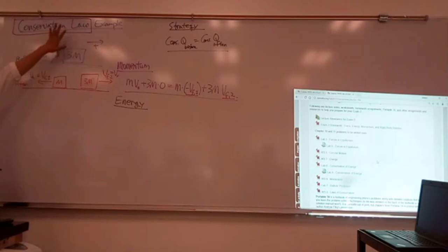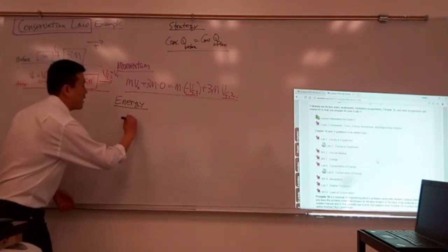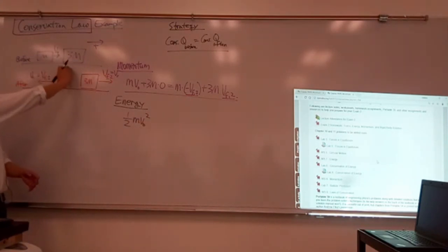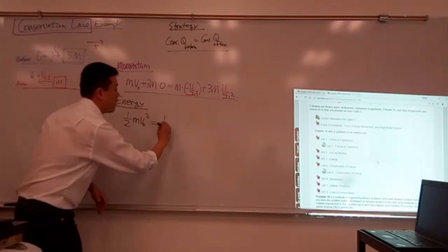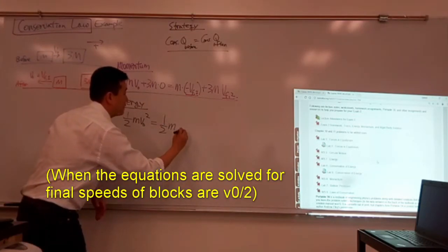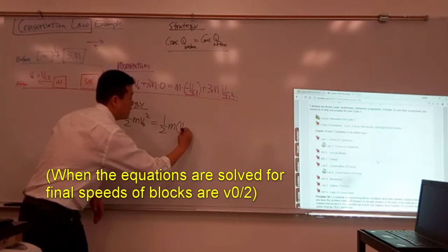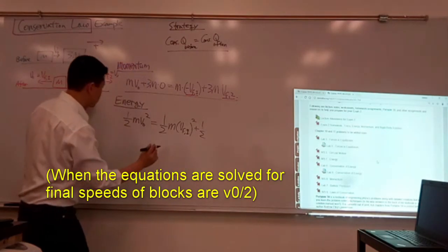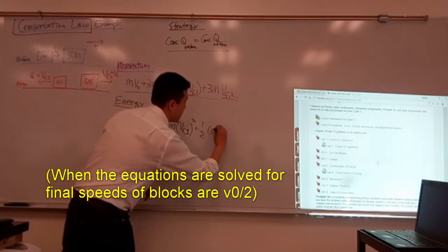So here, all the energies you have are kinetic energy, no potential energy here. So you can say 1 half M V naught squared, initial kinetic energy, is equal to the final kinetic energy here, 1 half M V final 1 squared plus 1 half times the mass, 3M, times V final 2 squared.